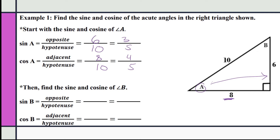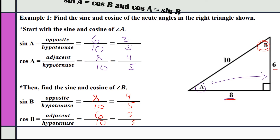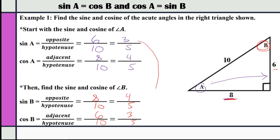Now let's look at angle B. The sine of angle B: the opposite side is 8 and the hypotenuse is 10, which reduces to 4/5. The cosine of angle B: the adjacent side is 6 and the hypotenuse is 10, which reduces to 3/5. Notice that the sine of angle A equals the cosine of angle B — both equal 3/5 — and the cosine of angle A equals the sine of angle B.